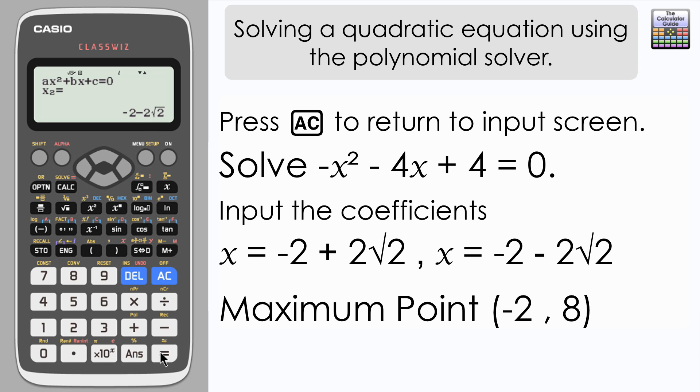And if we press equals this time we have the maximum point or the coordinates of the maximum point of the quadratic equation. Remember that a negative x squared will give you a maximum rather than a minimum point. So we've got an x coordinate of negative 2 and a y coordinate of 8.